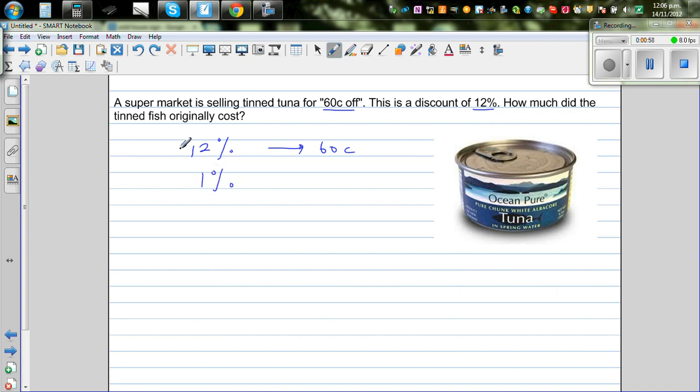This is a good technique you can use for any type of example. So if you find 1%, well this is divided by 12. So 12 divided by 12 gives you 1. So you do the same thing here. 60 divided by 12 is 5 cents.